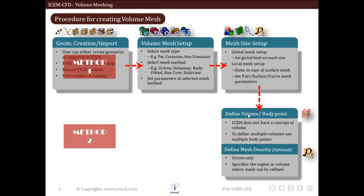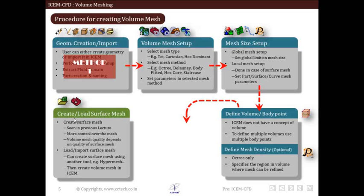Next we define the volume using body points. ICEM CFD does not have a direct concept of volume, so to define the entire volume for meshing we define multiple volumes using multiple body points. Body points are associated with volumes, and when we define a body point, that is the volume that will be considered for meshing. After this, we define mesh density using the octree method, which specifies the mesh density volume. At this stage, Method 2 can also come into picture — we can create a surface mesh or directly load an available surface mesh. This gives better control over the volume mesh, and the volume mesh quality depends on the quality of this shell or surface mesh.